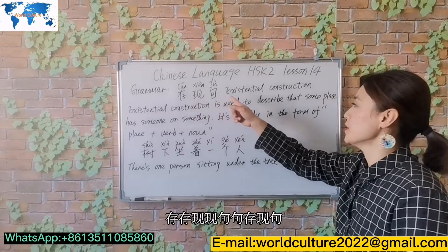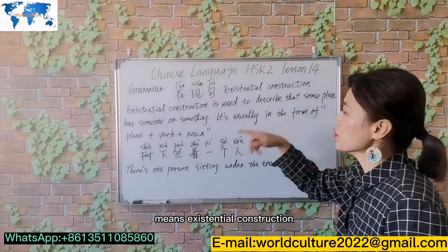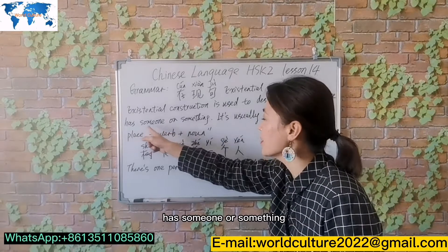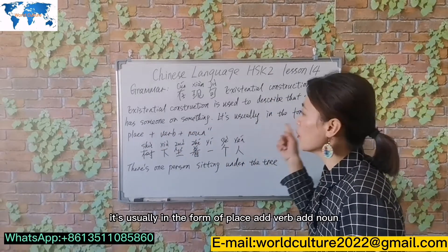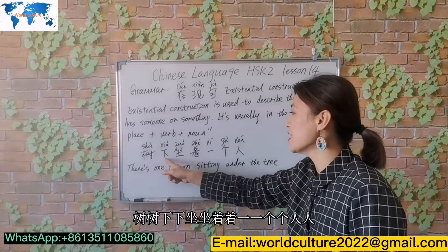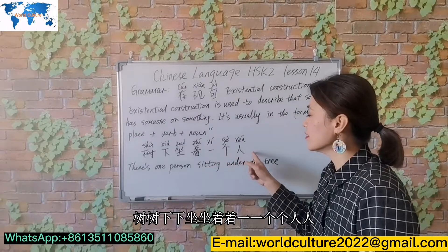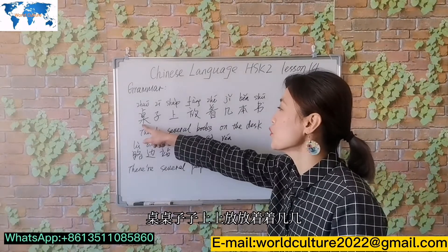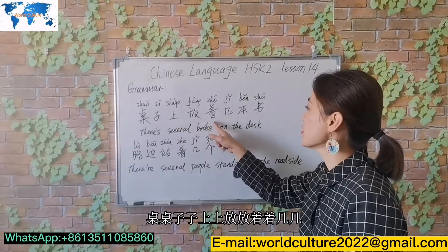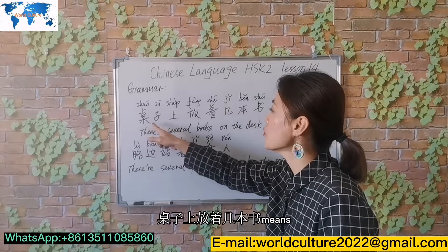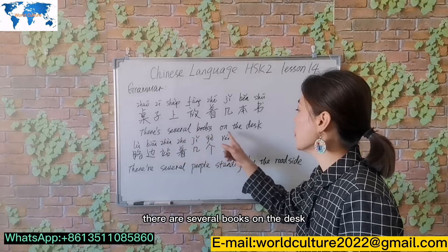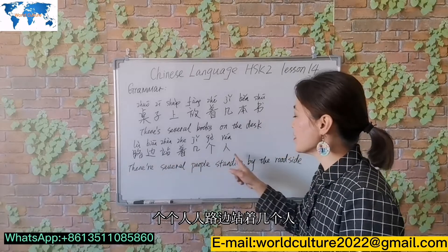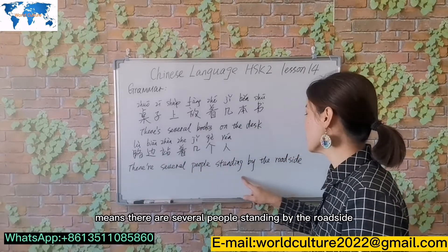存现句 means 'existential construction'. Existential construction is used to describe that some place has someone or something. It's usually in the form of: place + verb + person/thing. 树下坐着一个人 means 'there is one person sitting under the tree'. 桌子上放着几本书 means 'there are several books on the desk'. 路边站着几个人 means 'there are several people standing by the roadside'.